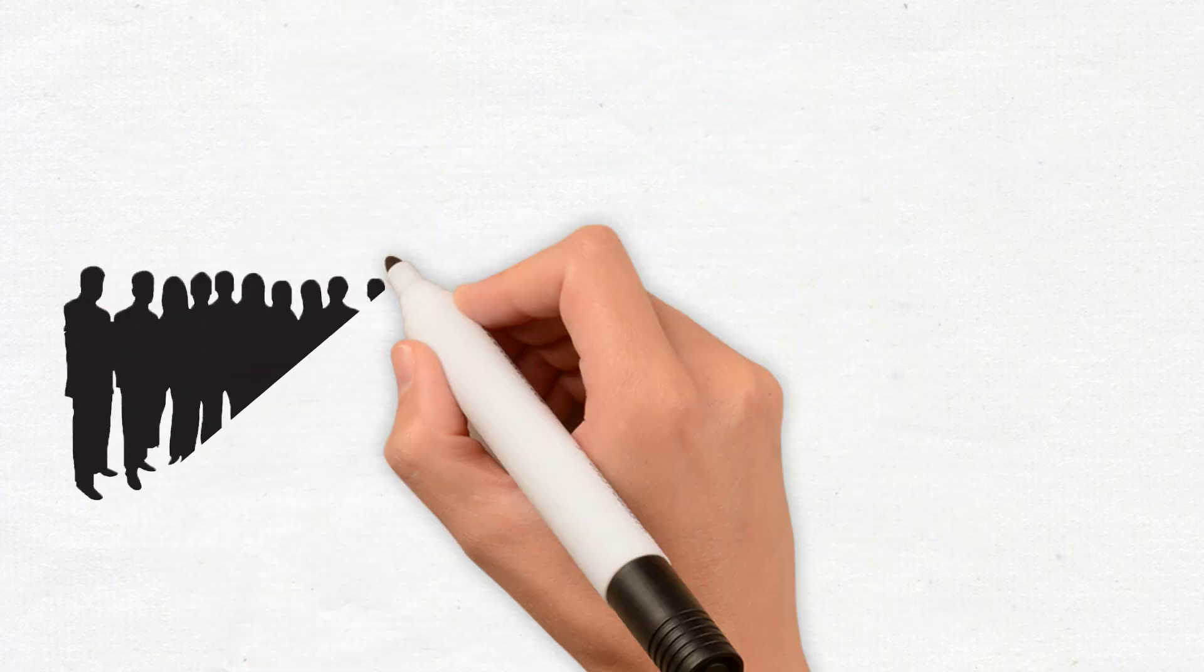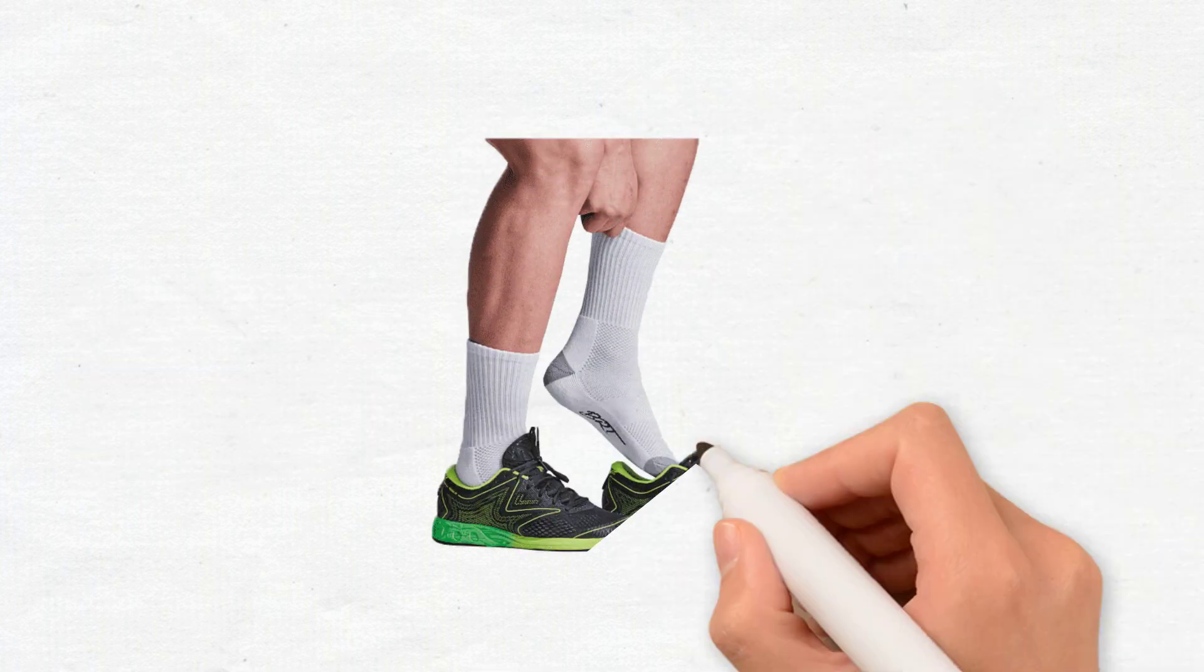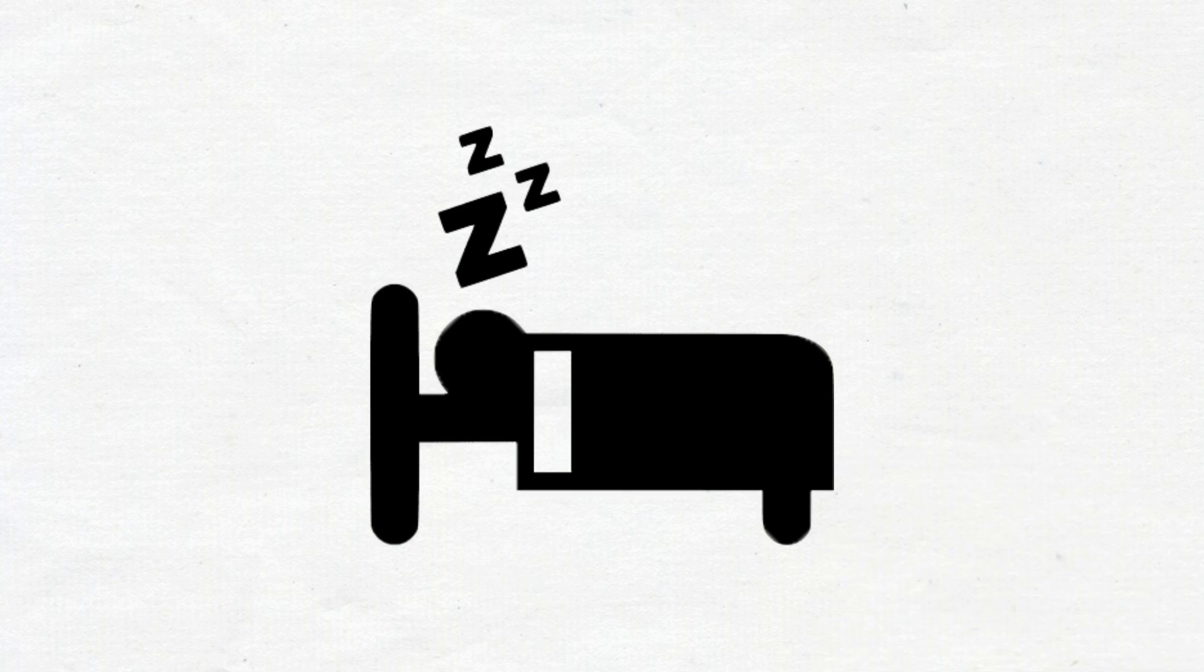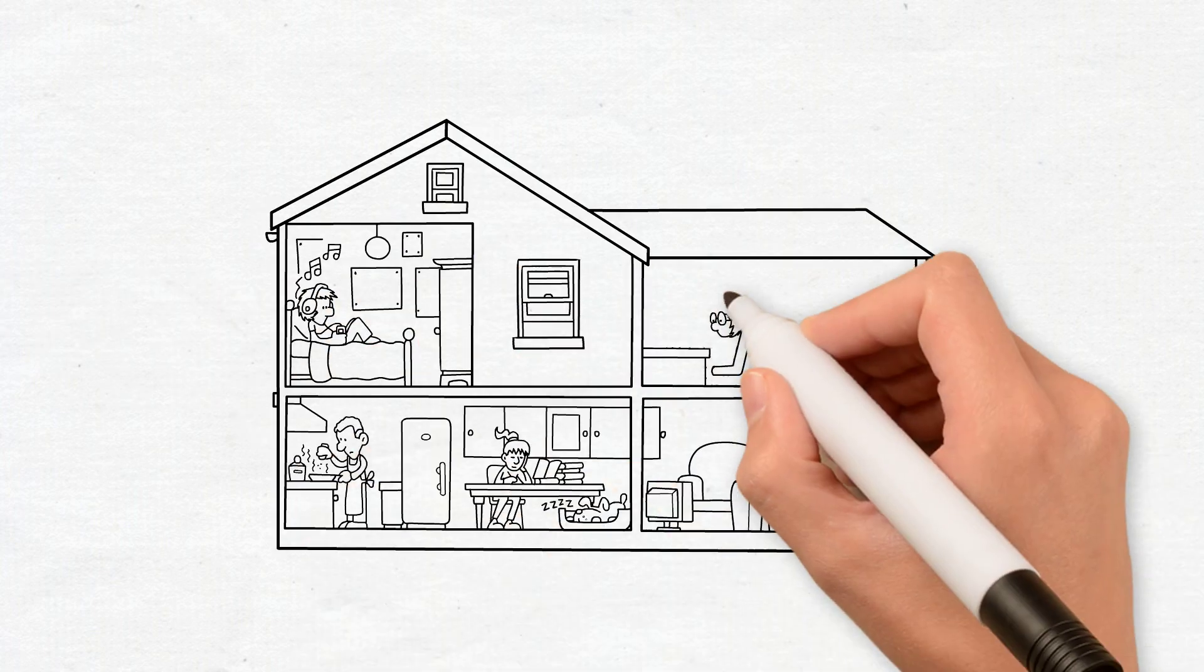For the first time in history, most people aren't physically connected to the Earth. We wear shoes that don't let electricity pass through, sleep on elevated beds mostly indoors, and generally don't spend much time in direct contact with the Earth.